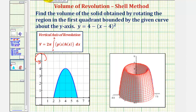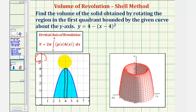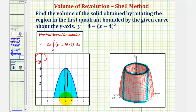When using the shell method, the representative rectangle will always be parallel to the axis of rotation. So let's use this rectangle here to help set up our integral. If we rotated this about the y-axis, it would give us the approximate volume of one shell of our solid, maybe this shell here. Notice how the width of the rectangle would be delta x.